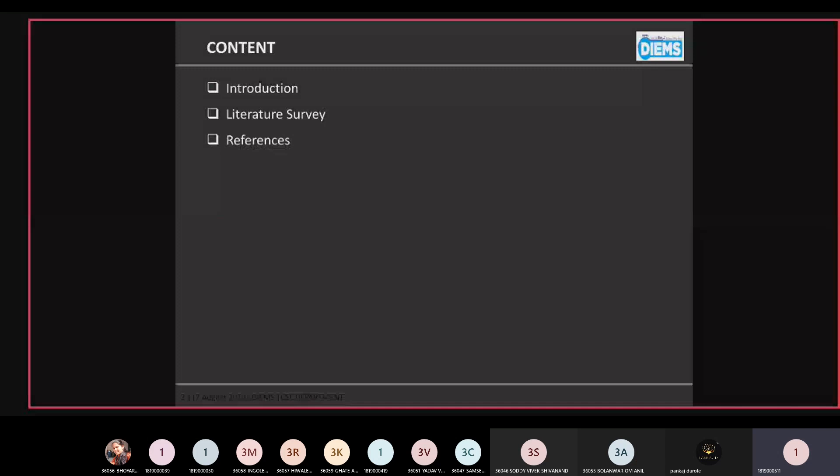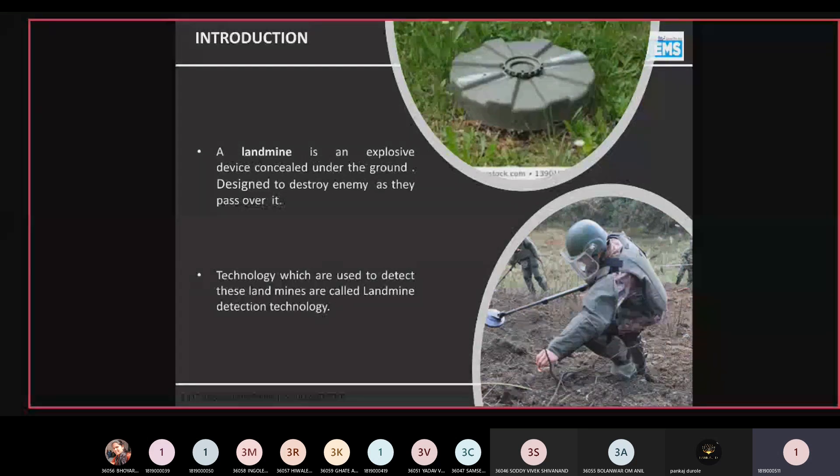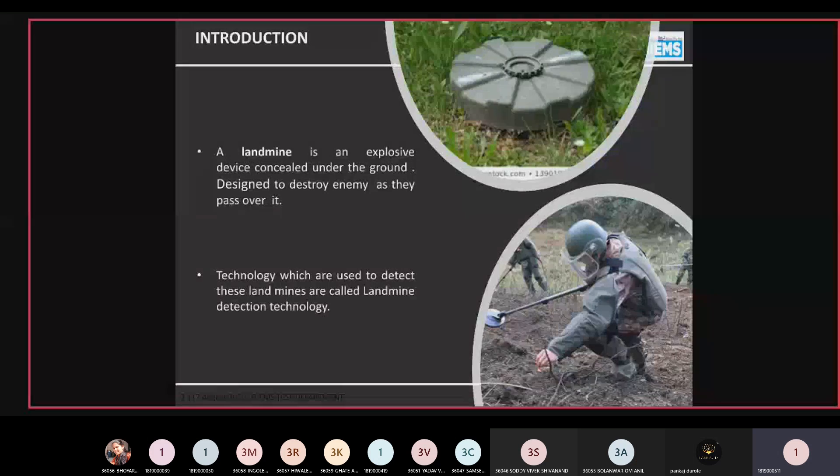The contents are introduction, literature survey, and references. Introduction: what is basically a landmine? A landmine is an explosive device concealed under the ground designed to destroy an enemy target which is passing over it. The technologies which are used to detect these landmines are known as landmine detection technologies.